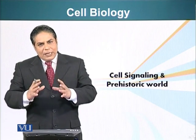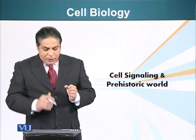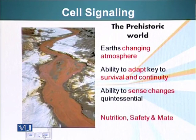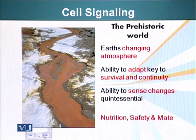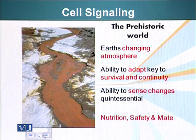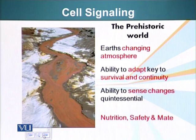The internal environment of the cell was preserved — this was very important for the continuity of life. This ability of cells to sense and adapt to their environment allowed life to continue. Cells not only need to sense their environment for changes, but also to find nutrition, to find a safe place away from threats, and also to mate.